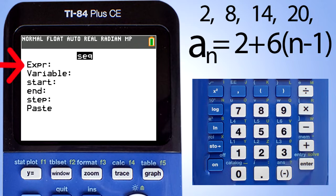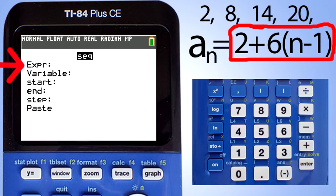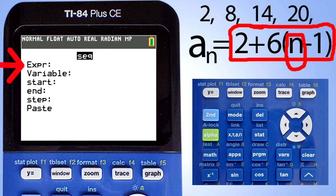The first line, expression. Here, type in this part of our equation. But instead of using the variable n, we will use the variable x, which is this button here. 2 plus 6 times x minus 1.